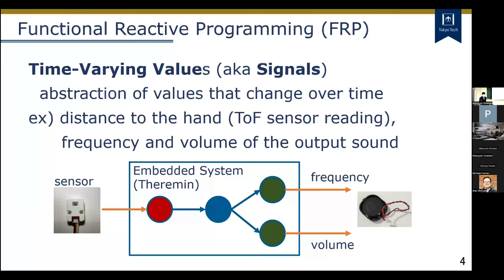In FRP, the behavior of a reactive system is described as a directed graph where those time-varying values are nodes in FRP and edges represent their dependencies. FRP can separate event handlers and callbacks, which are common patterns used to describe reactive behaviors, that can reduce code readability.